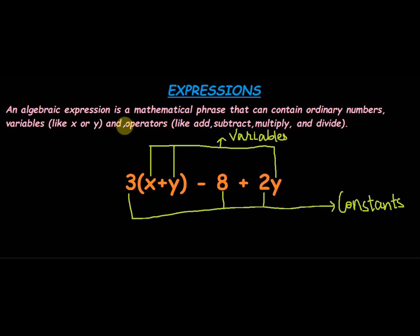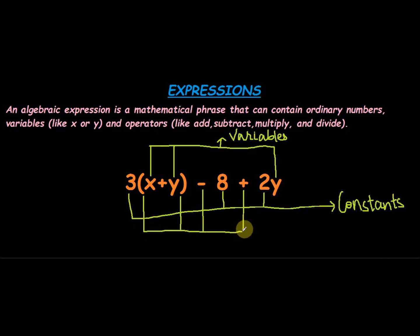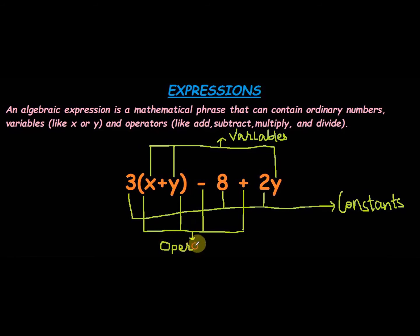The operators are the bracket sign, the subtraction sign, and the addition sign. They are called operators because they cause operations in the particular expression. Because of the subtraction sign, the number 8 would be subtracted from this entire thing — they are basically causing an operation to occur. The division sign and the multiplication sign are all called operators as well.